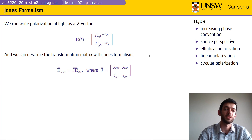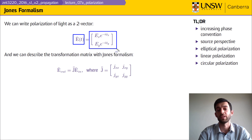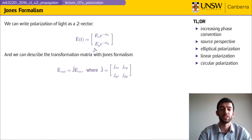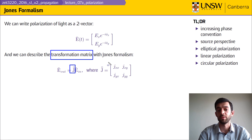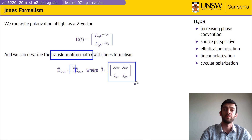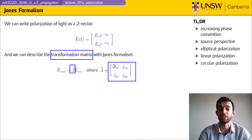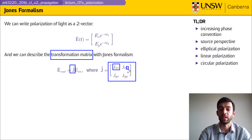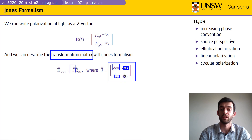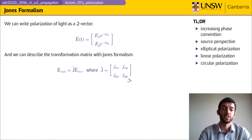In order to solve polarization problems we need to introduce Jones formalism. Jones formalism simply writes the electric field as a two-component vector with an x component and a y component, and introduces a transformation matrix J — a two-by-two matrix that performs some manipulation mapping the x and y input components to x and y output components.